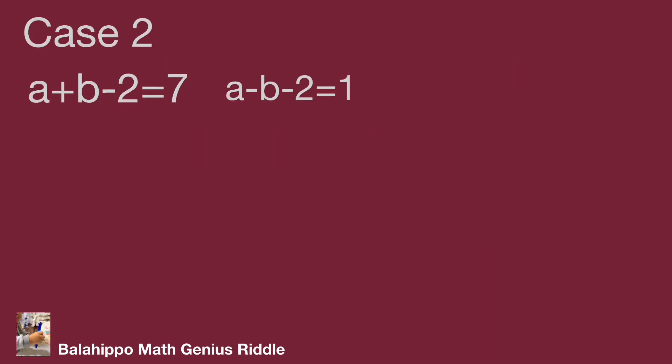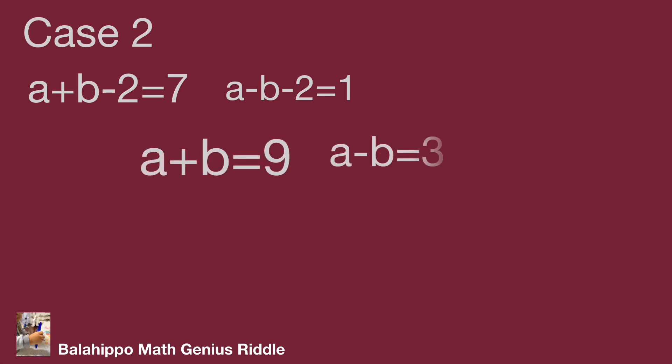In case 2: a plus b minus 2 equal to 7 and a minus b minus 2 equal to 1. Solving these simultaneous equations, we get a equal to 6 and b equal to 3.